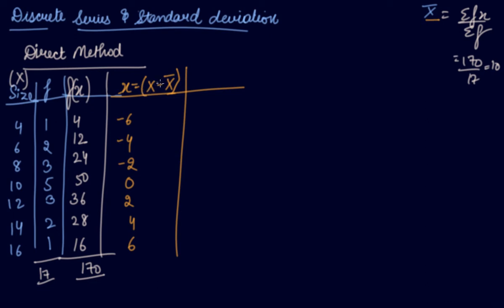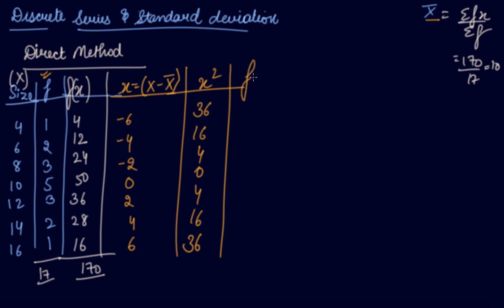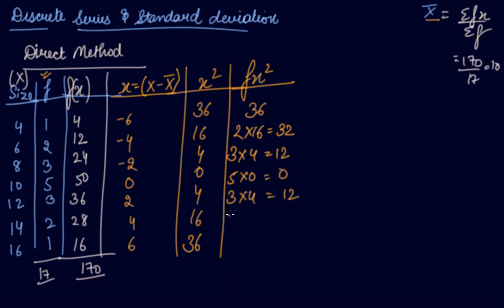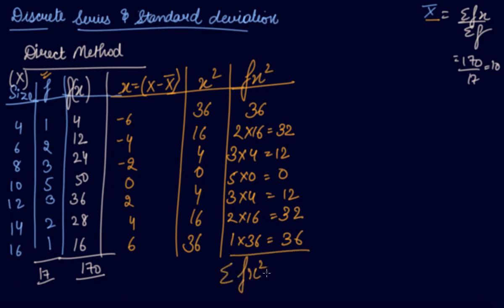You then calculate x² values: 36, 16, 4, 0, 4, 16, 36. In the individual series we would stop here, but in the discrete series we have frequency, so we multiply x² by frequency to get fx²: 1×36=36, 2×16=32, 3×4=12, 5×0=0, 3×4=12, 2×16=32, 1×36=36. The summation of fx² equals 160.